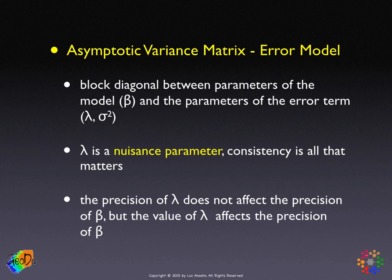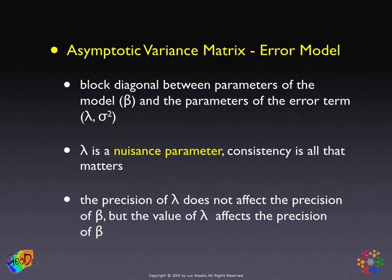The value of lambda does affect the precision of beta, because the variance of beta is computed from the spatially filtered variables that include lambda — but the precision of lambda itself doesn't matter. This allows us to implement feasible generalized least squares as spatially weighted least squares. Once we obtain a consistent maximum likelihood estimate for lambda from the first-order conditions, we plug it into the weighted least squares and obtain a consistent estimate for the betas as well as an estimate of their precision.